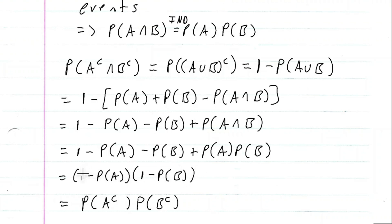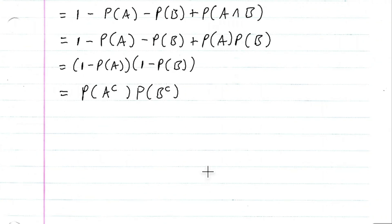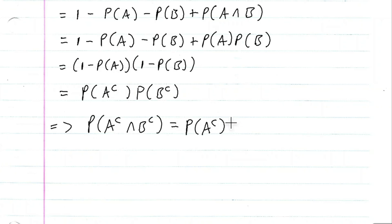Multiplying out: one times one is one, one times negative probability of B is negative probability of B, negative probability of A times one is negative probability of A, and negative probability of A times negative probability of B is positive probability of A times probability of B. So this expression equals our target form. This implies that the probability of A complement intersection B complement is indeed equal to the probability of A complement times the probability of B complement. And that is our proof.